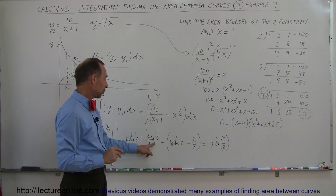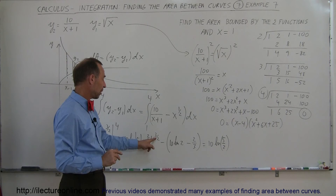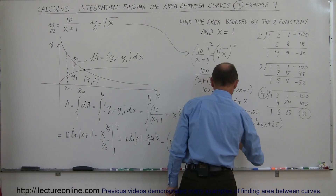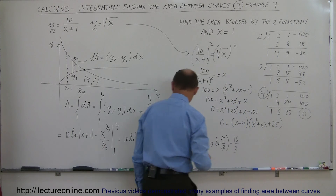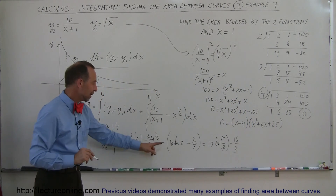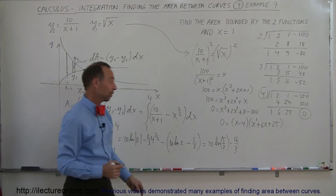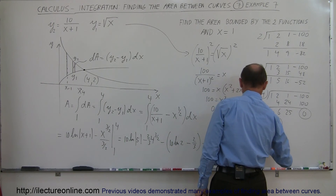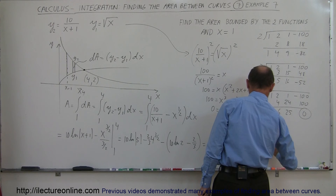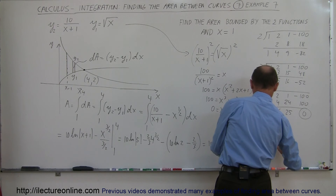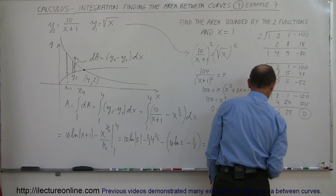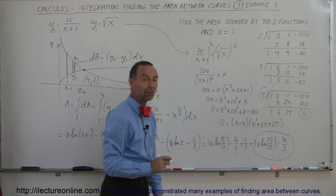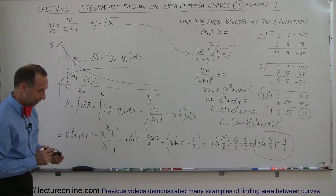4 to the three-halves: the square root of 4 is 2, and 2 cubed is 8; 8 times 2 thirds is 16 thirds. So we have minus 16 thirds, and the minus of a minus becomes plus two-thirds, giving minus 14 thirds overall. The final answer is 10 times the natural log of five-halves, minus 14 thirds. That's good enough — we could use a calculator or just leave it in that form.